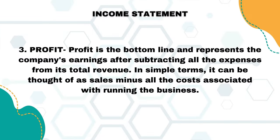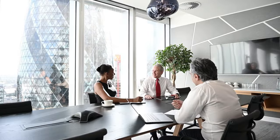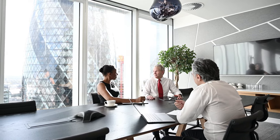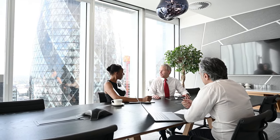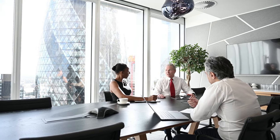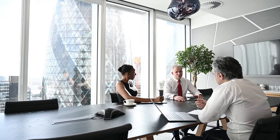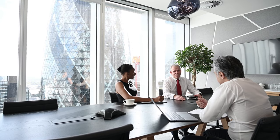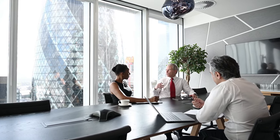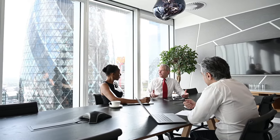Three: Profit. Profit is the bottom line and represents the company's earnings after subtracting all the expenses from its total revenue. In simple terms, it can be thought of as sales minus all the costs associated with running the business. Understanding these elements of the income statement is crucial for anyone looking to make informed investment decisions. It provides a clear picture of a company's financial health and performance over a specific timeframe.